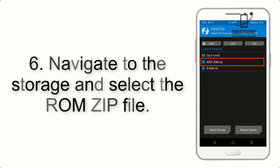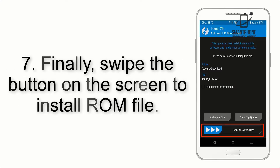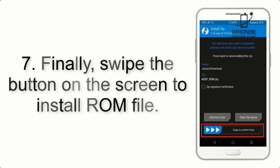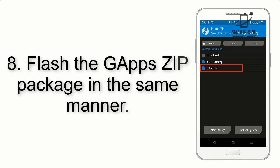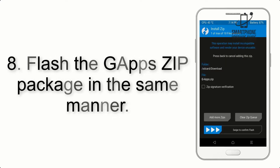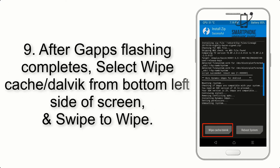Step 5: Go back to the recovery main screen and tap on the Install button. Step 6: Navigate to the storage and select the ROM zip file. Step 7: Finally, swipe the button on the screen to install the ROM file.